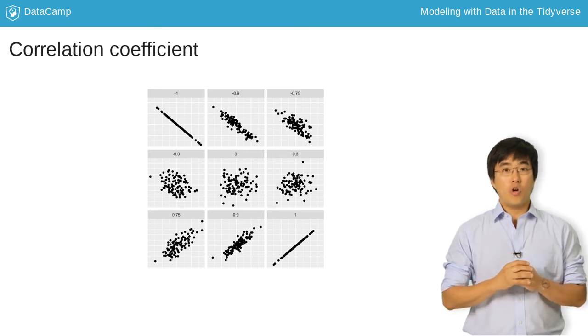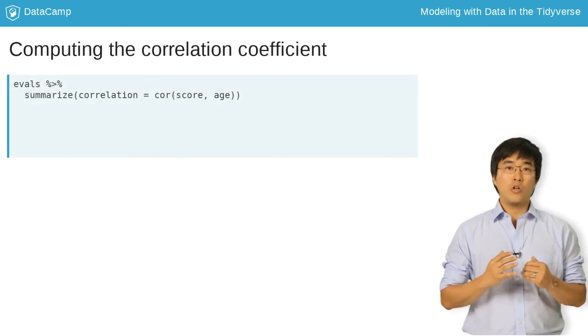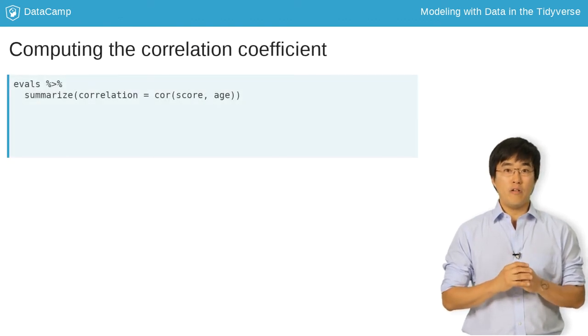Let's compute the correlation coefficient for age and score. The cor function takes two numerical variables and returns the correlation, which you embed in the summarize function.